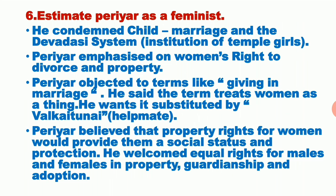Periyar emphasized women's right to divorce and property, equal to men. He objected to terms like 'giving in marriage,' saying that this term treats women as a thing, not a human being. He wanted to substitute it with 'Valkai Thunai' (helpmate), a word taken from the Thirukkural. He insisted on using 'Valkai Thunai' instead of 'giving in marriage.'